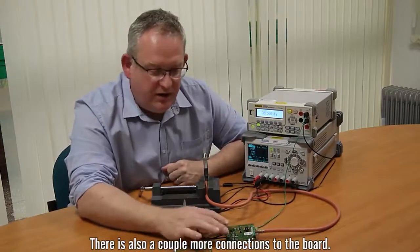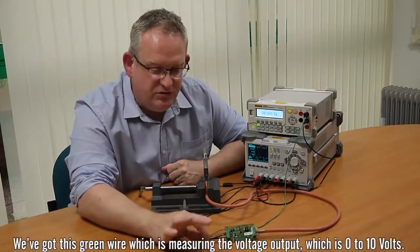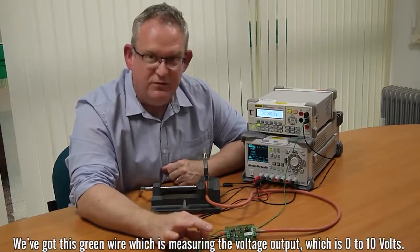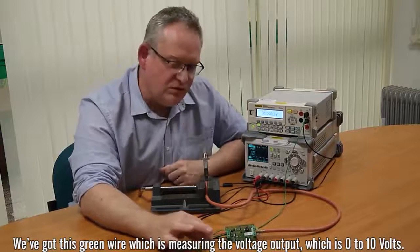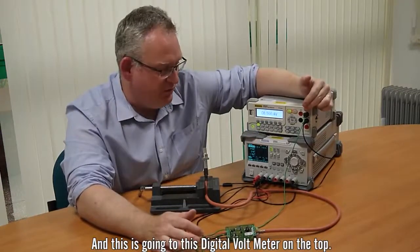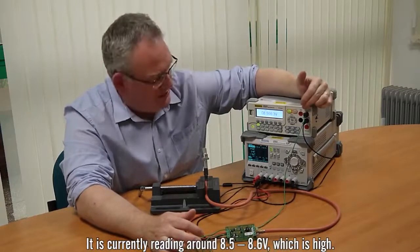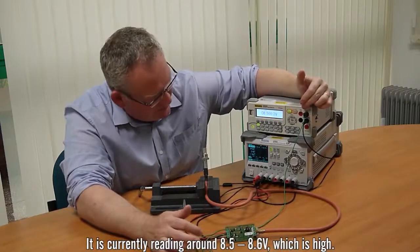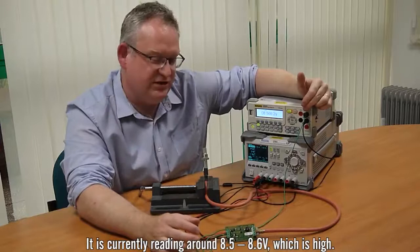There's also a couple more connections to the board. We've got this green wire which is measuring the output, the voltage output, which is 0 to 10 volts and it's going to this digital voltmeter on the top here. It's currently reading around 8.5, 8.6 volts which is high.